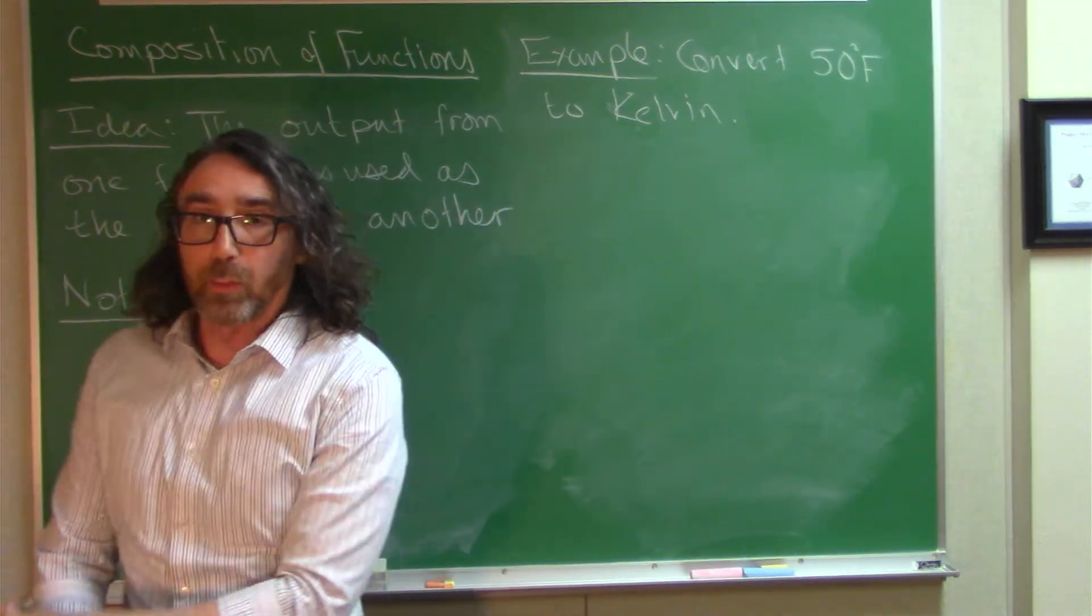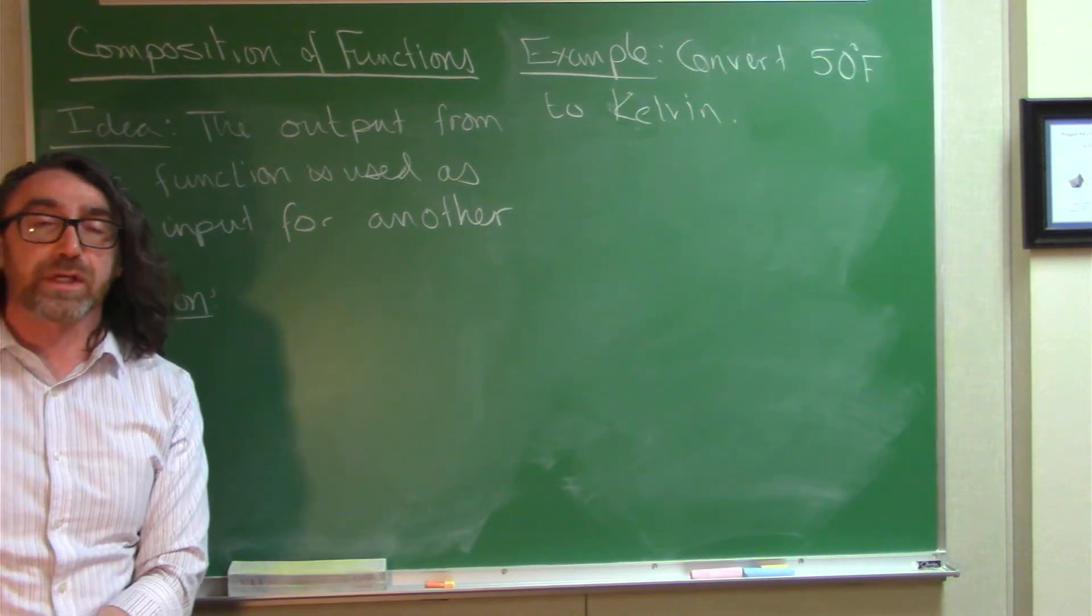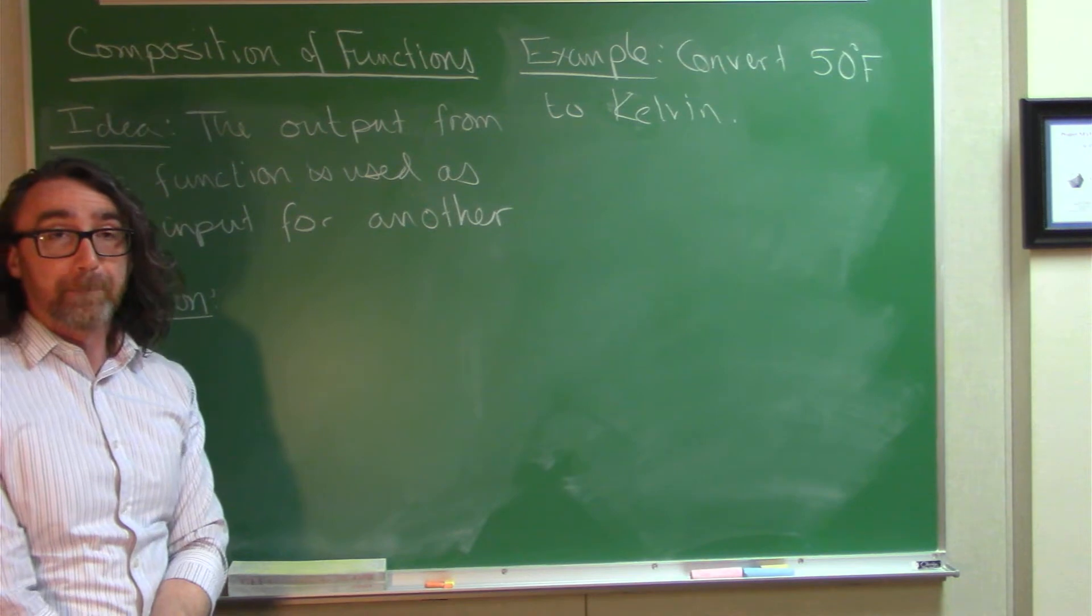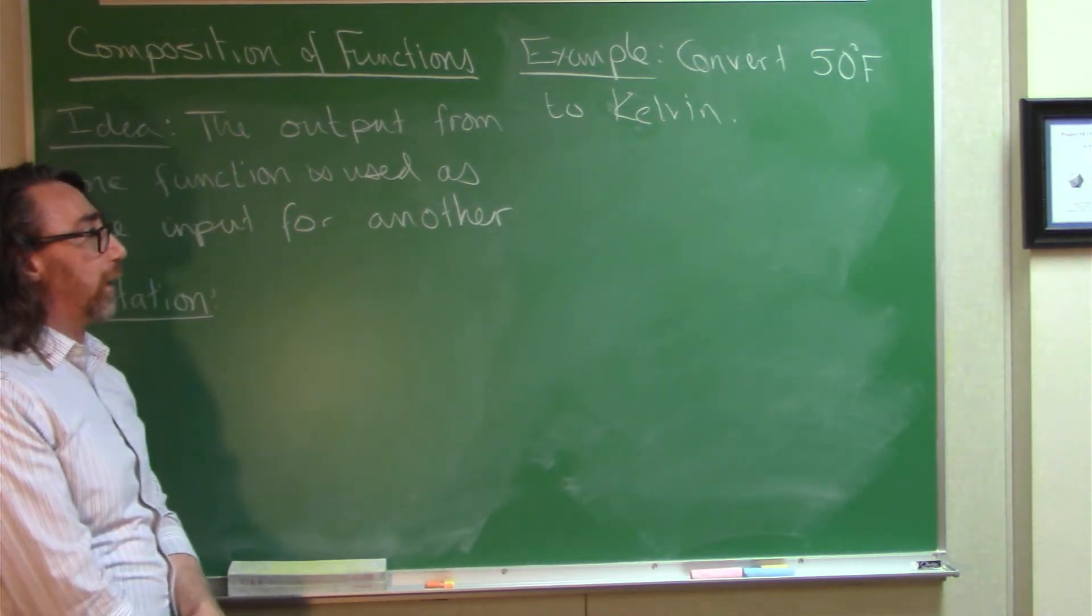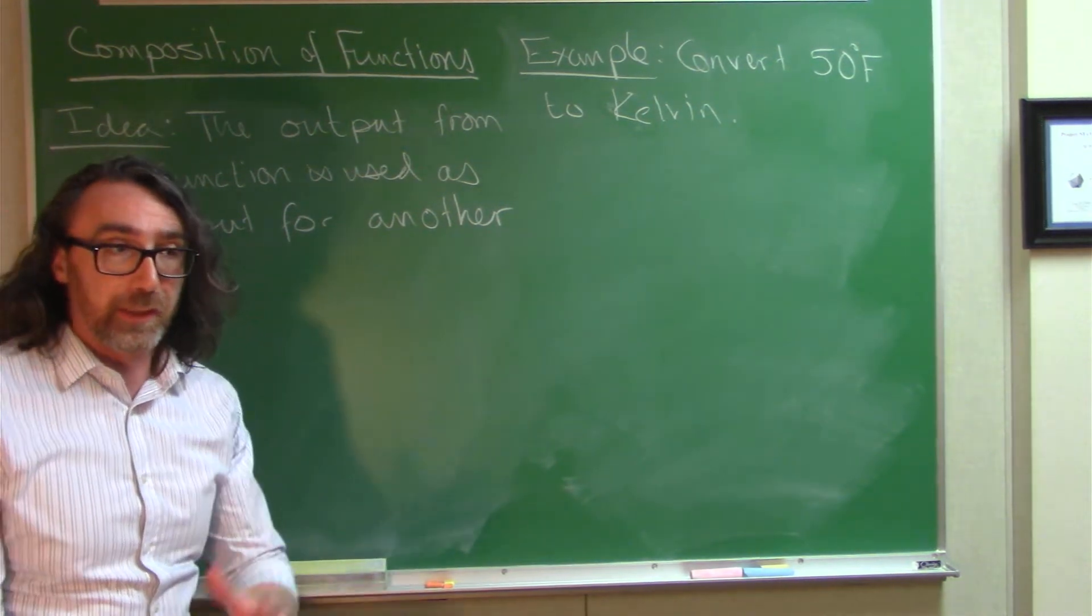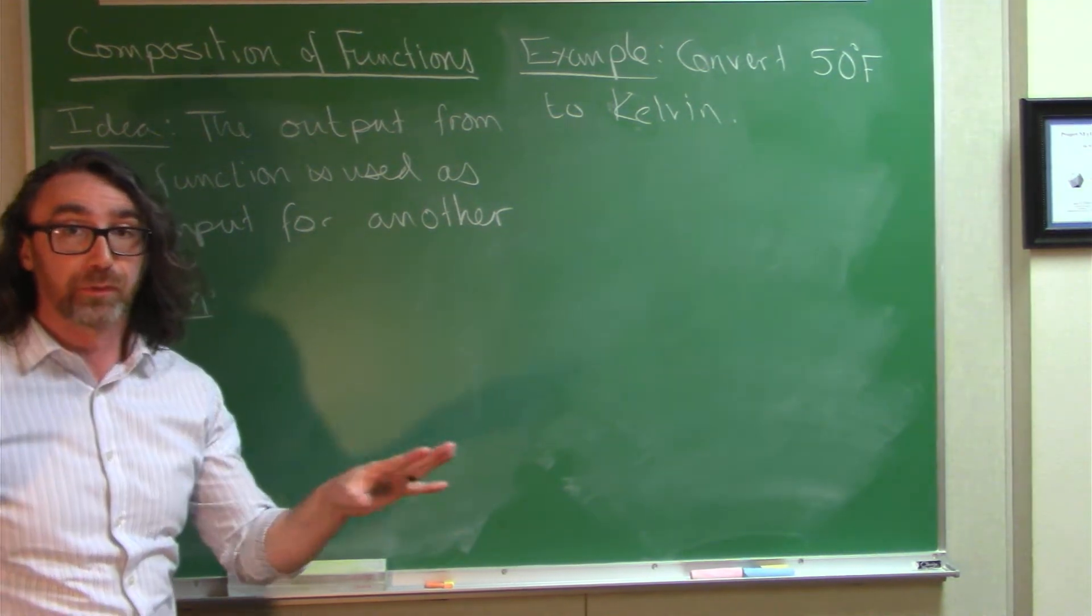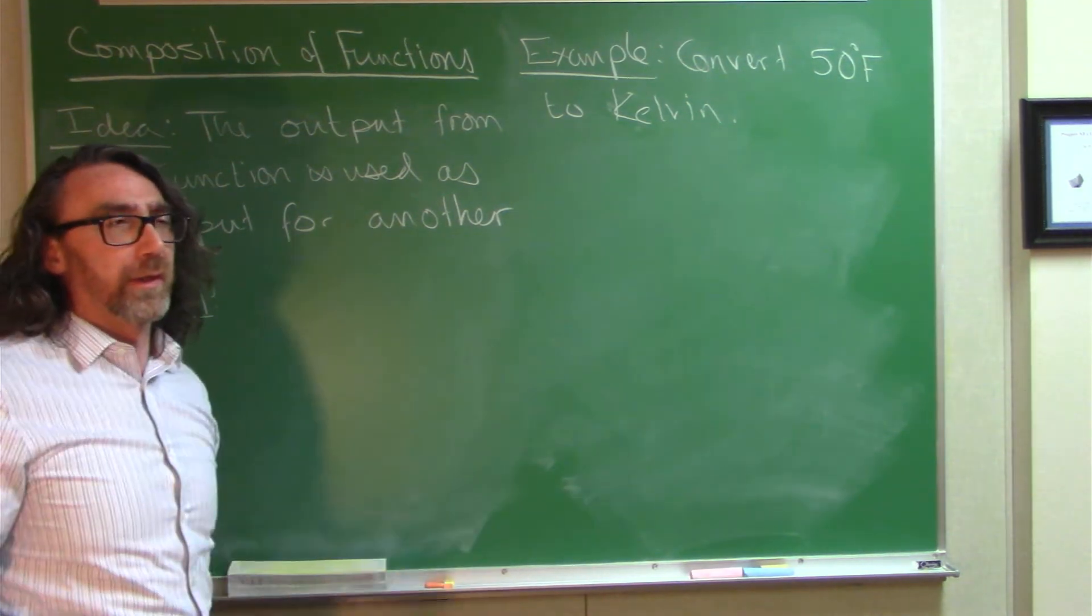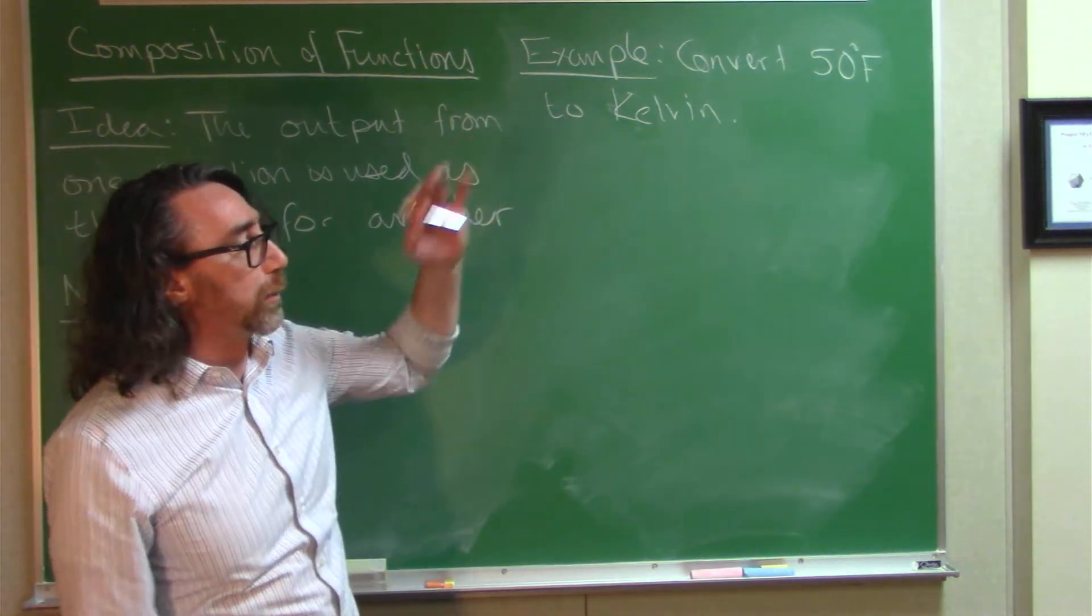So, I want to convert 50 degrees Fahrenheit to the Kelvin scale. Kelvin is the unit of measuring temperature in the SI system. It's not Celsius, it's Kelvin. And absolute zero on the Kelvin scale is indicative of no movement in any molecules at all. So you can't get lower in temperature than zero Kelvin. That's why they call it absolute zero. Okay, so we've got 50 degrees Fahrenheit, we want to convert to Kelvin.